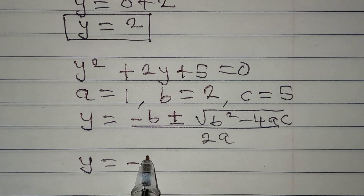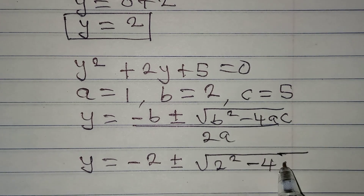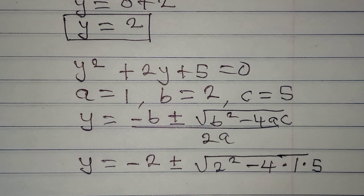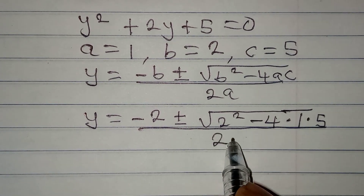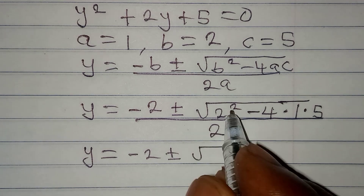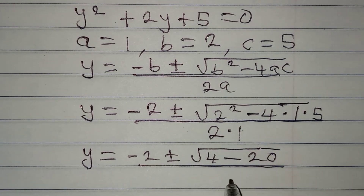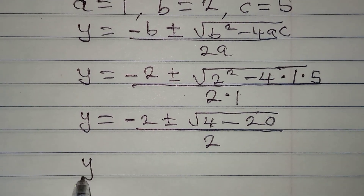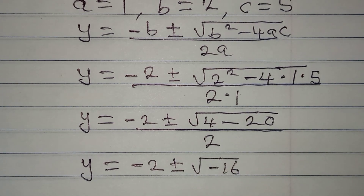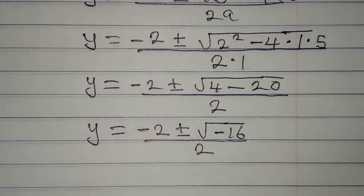Substituting: y equals minus 2 plus or minus square root of 2 squared minus 4 times 1 times 5, all divided by 2 times 1. That gives y equals minus 2 plus or minus square root of 4 minus 20, over 2. So y equals minus 2 plus or minus square root of negative 16, over 2.